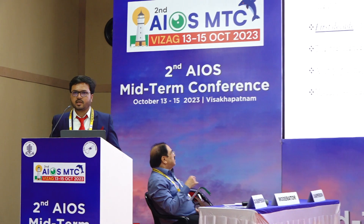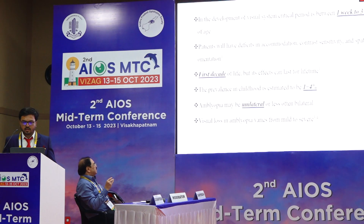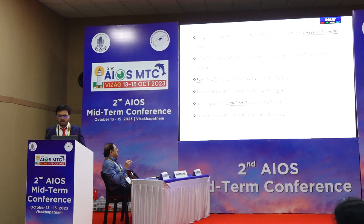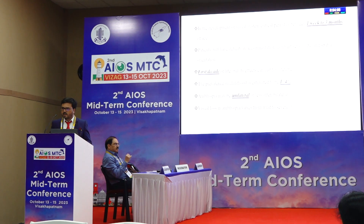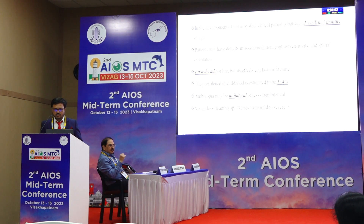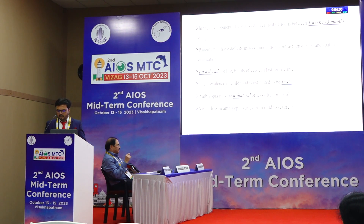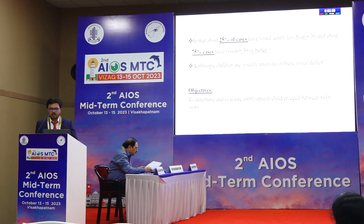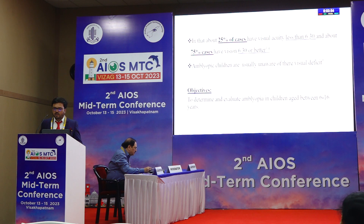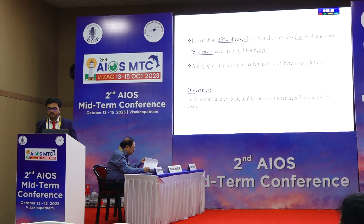Patients usually have presentation in the first decade of life and if not treated, the condition will persist for a lifetime. Prevalence in children is estimated to be one to four percent. Amblyopia may be unilateral and less often bilateral, and visual loss in amblyopia varies from mild to severe degree. Usually in 25 percent of cases visual acuity is less than 6/30, and about 75 percent of cases have vision 6/30 or better.